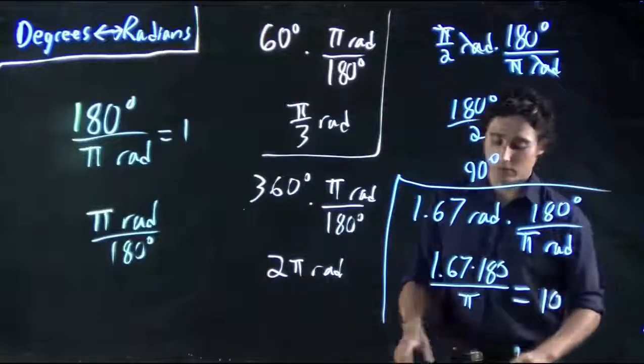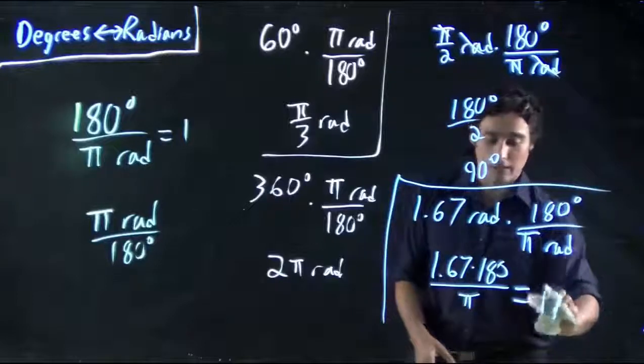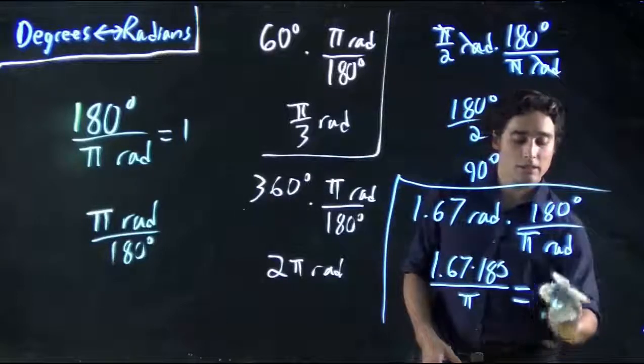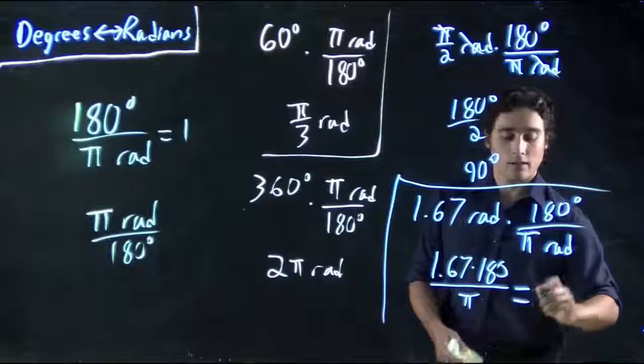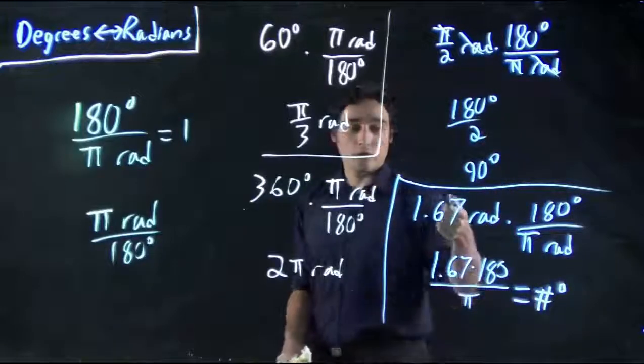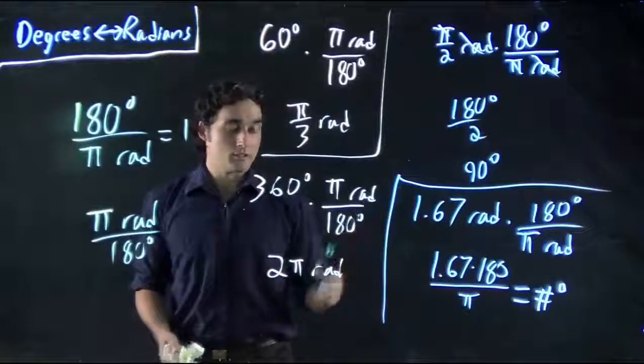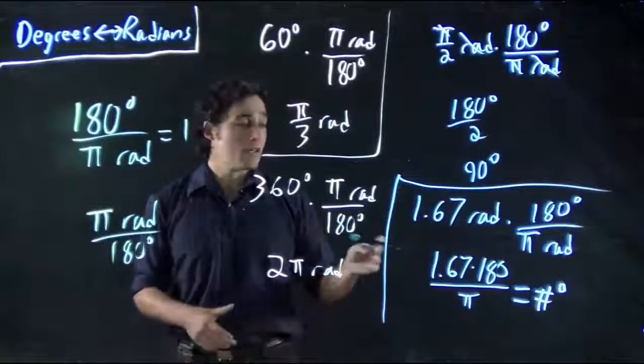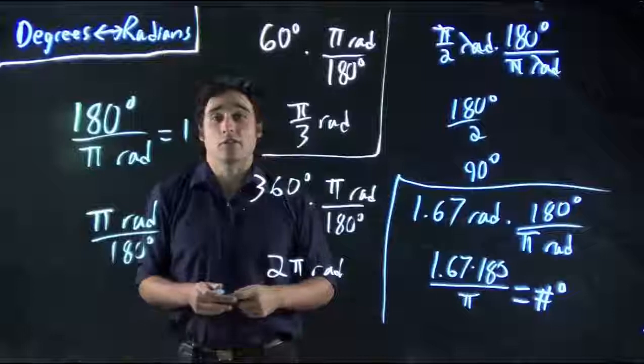Some number. Might be 10 but I doubt it. It would be some number. And that would be your degrees. So, you can have radians written just as a decimal. It's perfectly appropriate to do so. But this is how you do the conversions.